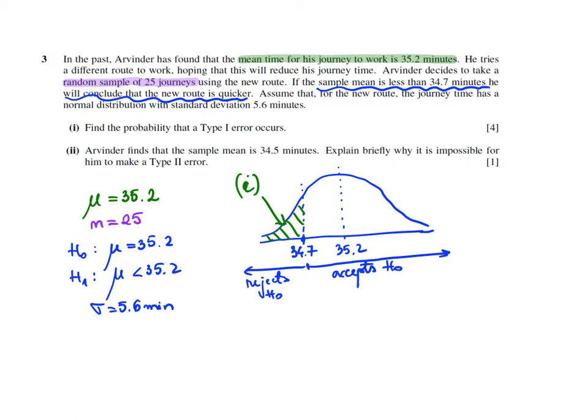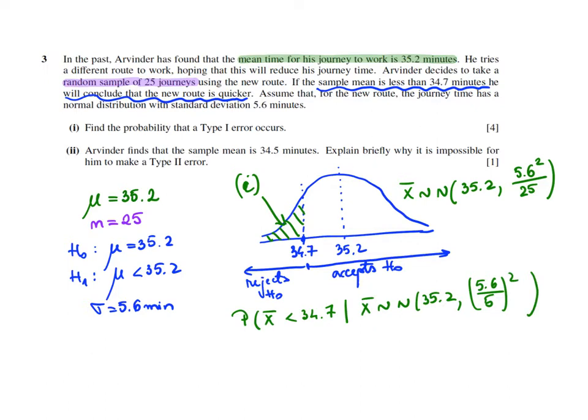So the probability of a type 1 error is probability of x-bar being less than 34.7. So this is the x-bar distribution of the mean. And because the route is normally distributed, the sampling distribution of mean is normally distributed as well. With the same mean, 35.2. And the standard deviation, 5.6. So the variance is 5.6 squared over 25. So basically, I need the probability of x being less than 34.7, given that x-bar is normally distributed with 35.2 and 5.6 over 5 squared. I like to write this because that is clear on which distribution is x-bar.